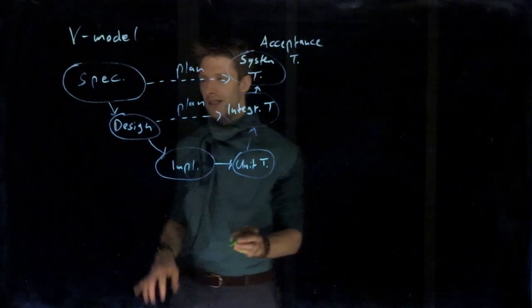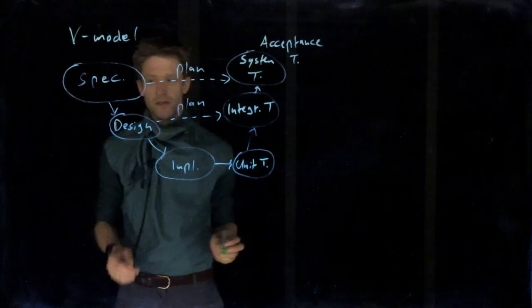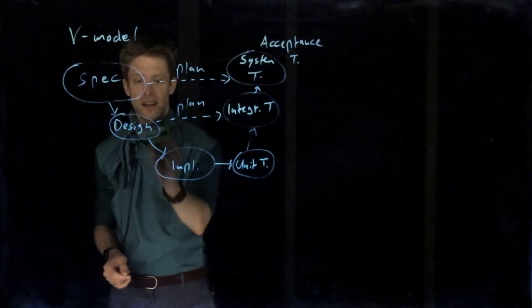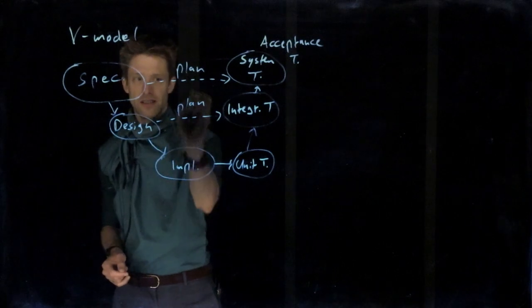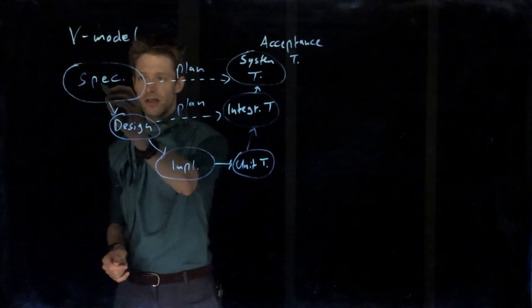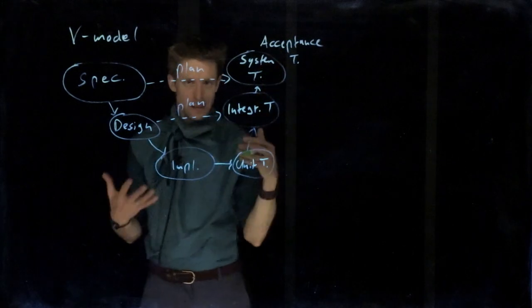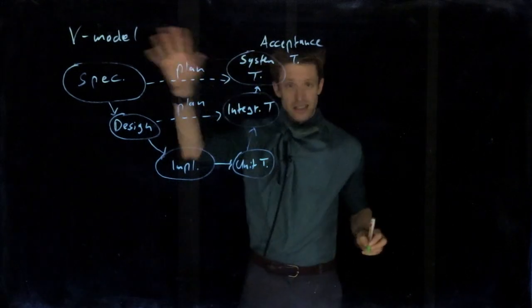Maybe sometimes you want to go back here, but you should be aware that if you go back, this actually affects these arrows as well. So if you decide to change a specification, you also have to go back and change the testing plan. That's the V-model.